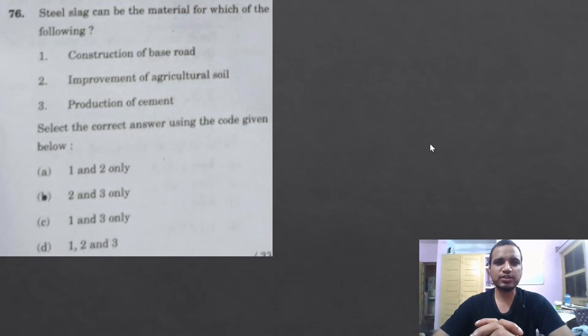Now construction of base road - you see, this is also done. If you see in the Jamshedpur area, there are some areas where in the construction of road this has been used. Then improvement of agricultural soil - yes, this is also used. Basically, what happens, the slag contains many elements like silicon, manganese, fluorine. So these basically help to act as a fertilizer with some modification.